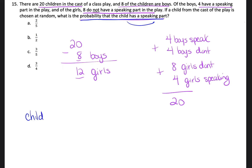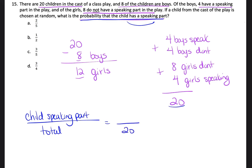The numerator is going to be the number of children that have a speaking part. And then the denominator is going to be the total amount of children in the play. We already know the total amount of children in the play is 20, so our denominator is going to be 20.